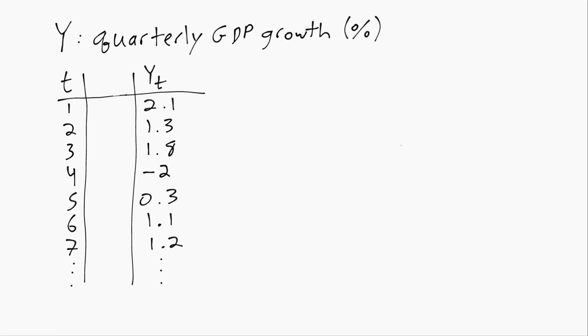This is an example of one way to generate H step-ahead forecasts. Our Y variable is quarterly GDP growth expressed as a percent, and in particular we're interested in predicting one year into the future or four quarters into the future. So here our H is four.